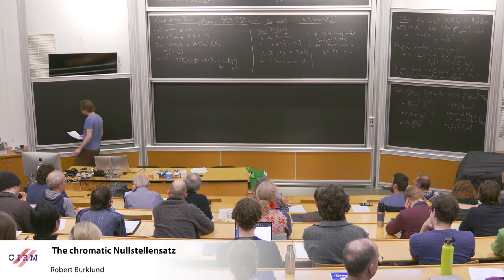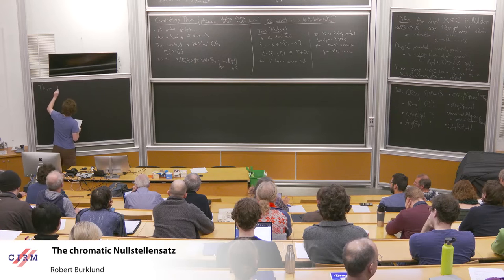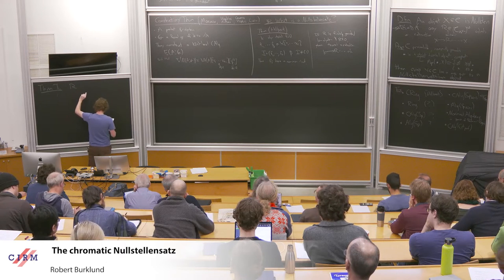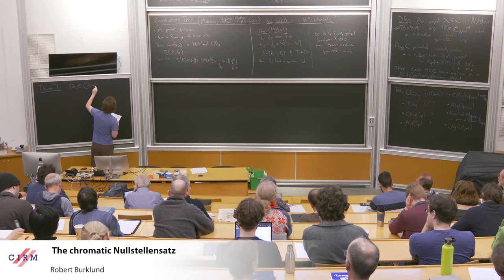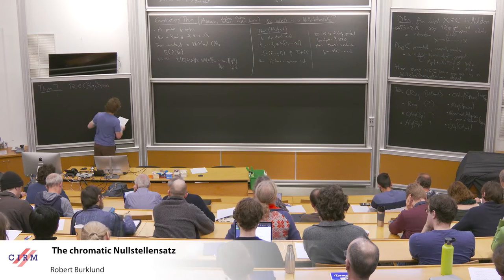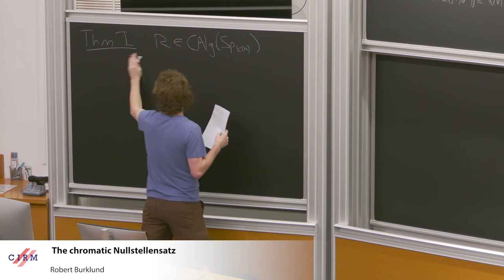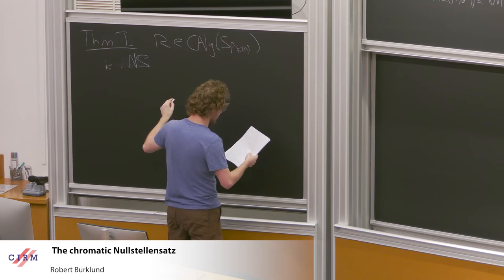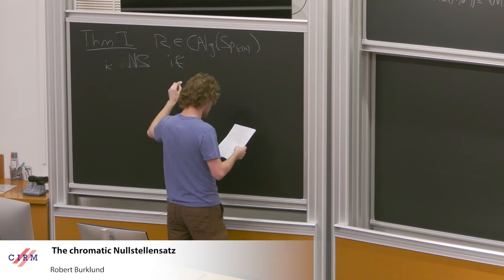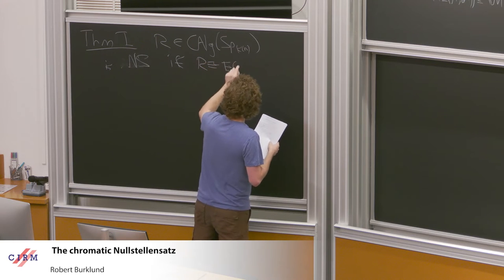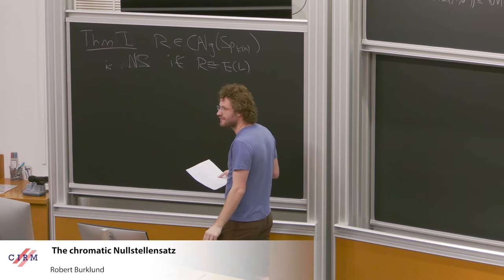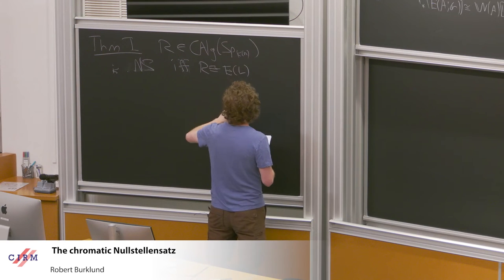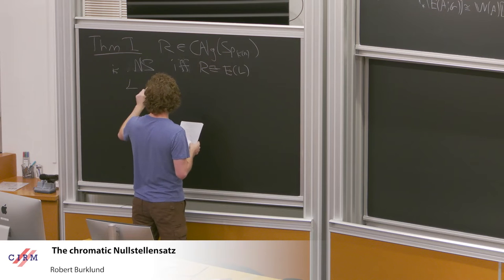So theorem: if you have some R in commutative algebras in K(n)-local spectra, then R is NS - I'll write NS from now on, I don't think there will be any objections - if and only if R is equivalent to E(L), if and only if E is isomorphic to E(L) where L is some characteristic p algebraically closed field.